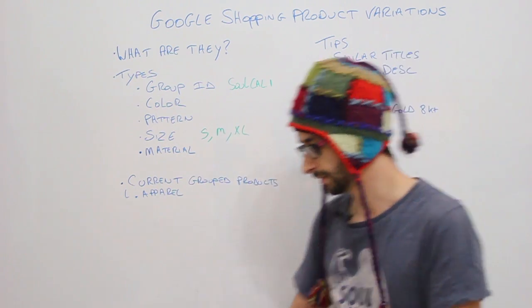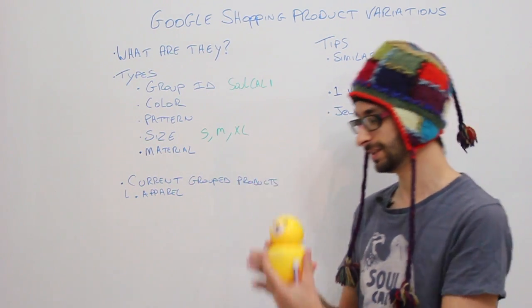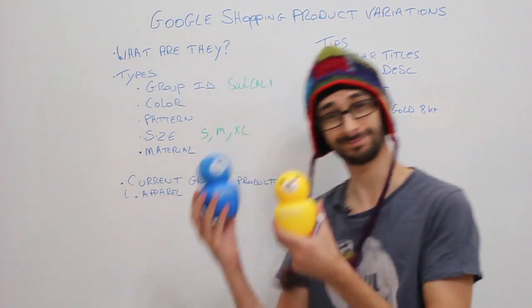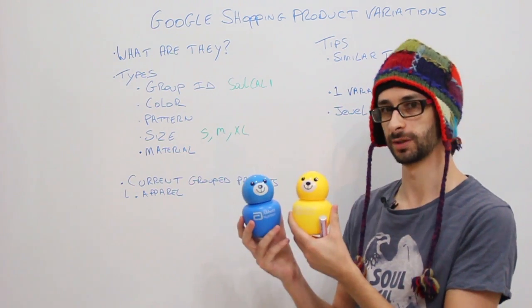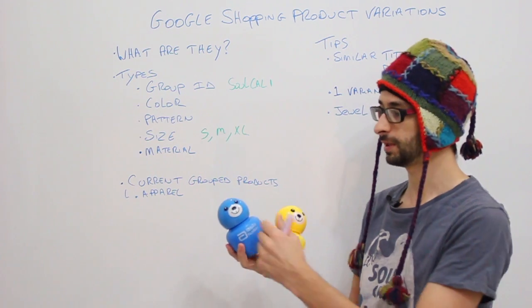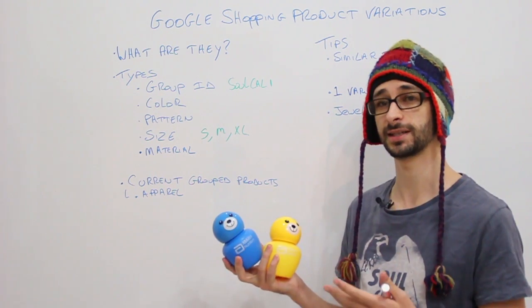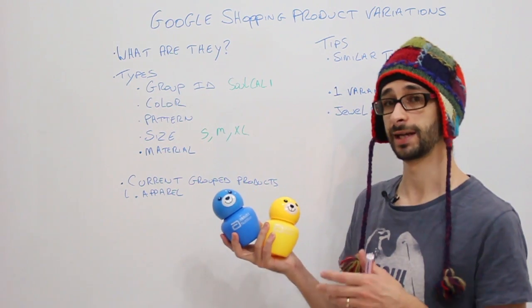So let's say we have this little toy here and we have this in a different color. If we sell these individually, they would be considered duplicates because they're identical with the same title and description, and this will not be allowed with Google.